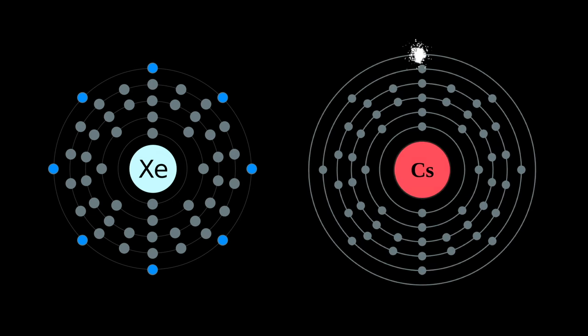Like cesium, all the alkali metals have only one electron in their outer shell, and at the risk of being anthropomorphic again, they'll do almost anything to get rid of that extra electron to look more like the noble gases. The alkali metals are viciously reactive.